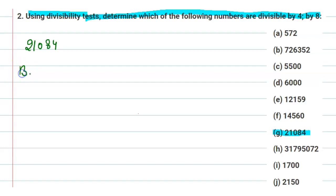First, checking by divisibility rule 4. If the last two digits are divisible by 4, then we can say that this number is also divisible by 4. You can check, 84 is divisible by 4, equals 21. So we can say that 21,084 is also divisible by 4.